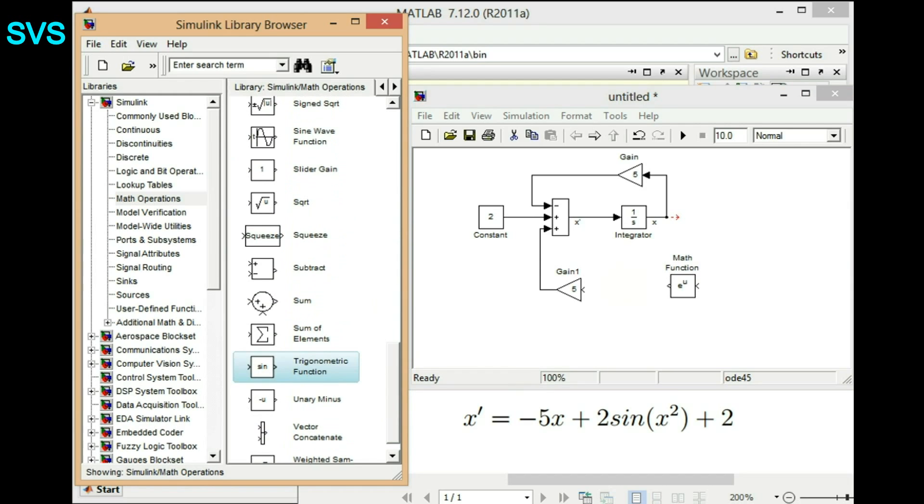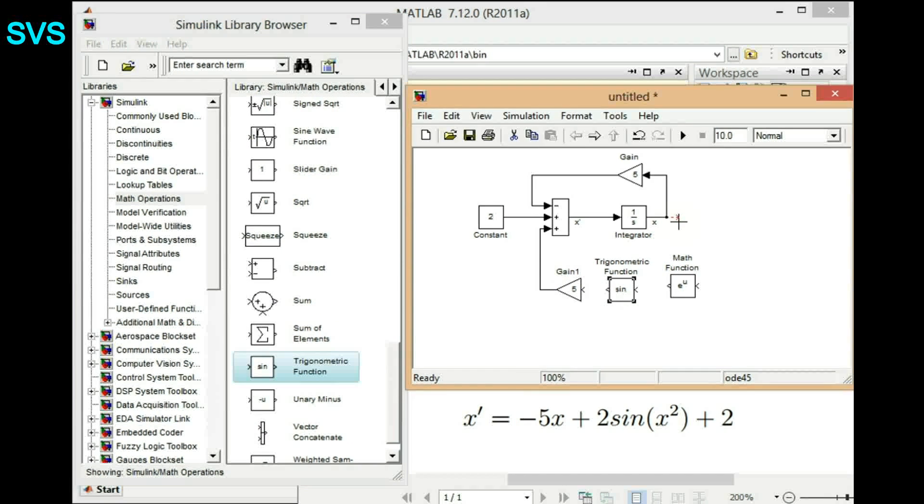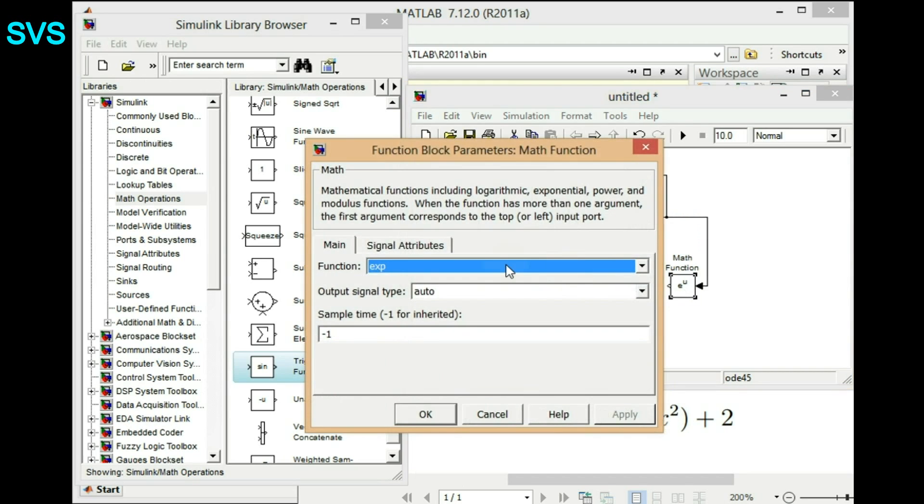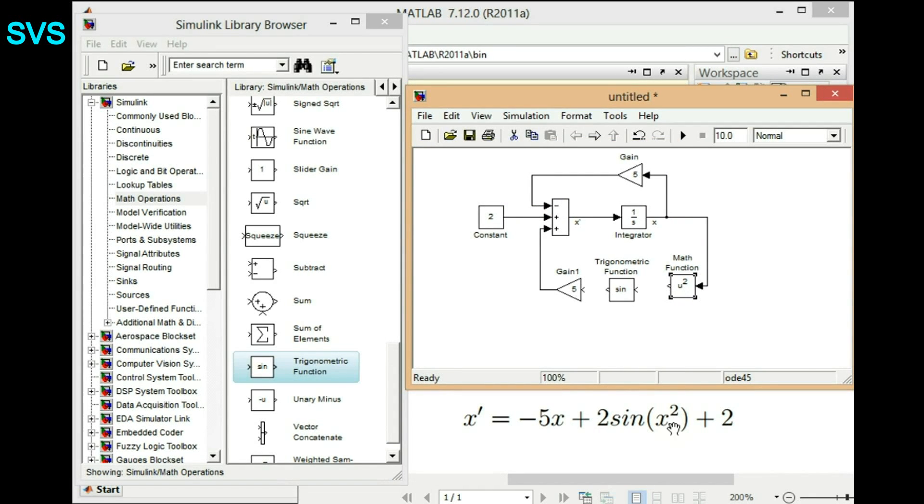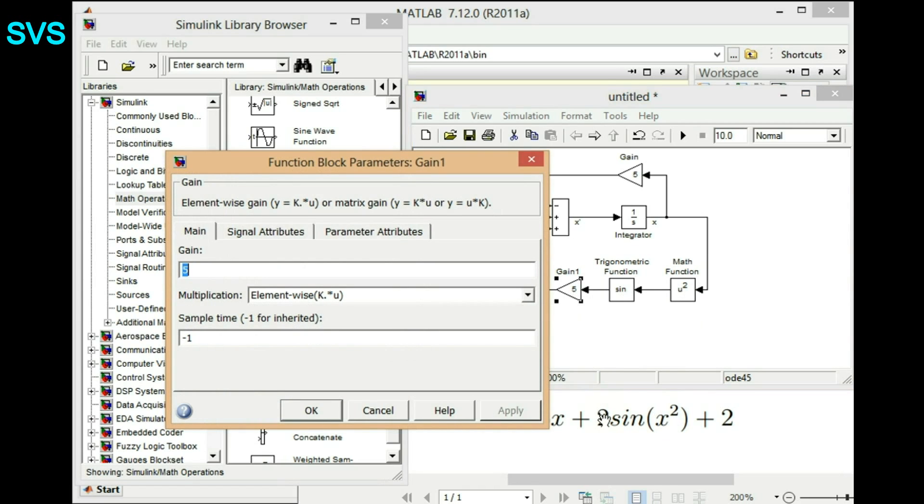There we go. So whatever input we give to that block, it will just take that trigonometric function. Let's connect a math function and then we'll connect it. So from this block we'll have x squared, so let's adjust that square function - yes, that is it. And then we'll connect it to sine. We want sine of that x squared, so we'll connect it. So we have sine x squared and let's scale it twice so we'll have a gain of 2.